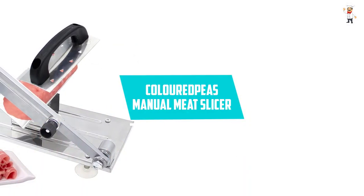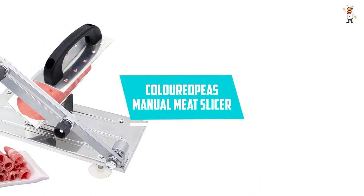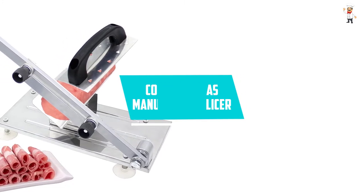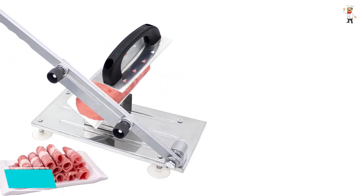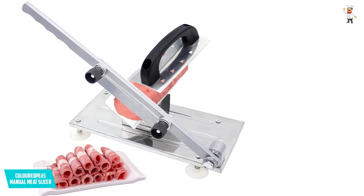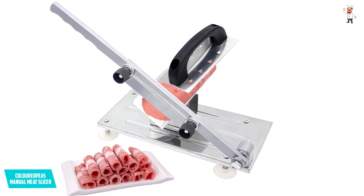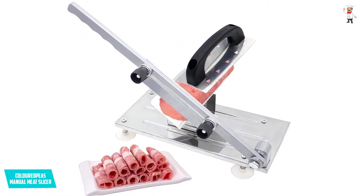At number 4, Colored Peas Manual Meat Slicer. What makes this frozen meat slicer worth buying is the fact that it features food-grade stainless steel materials. It also comes with a layer of protection which you should tear off upon receipt.